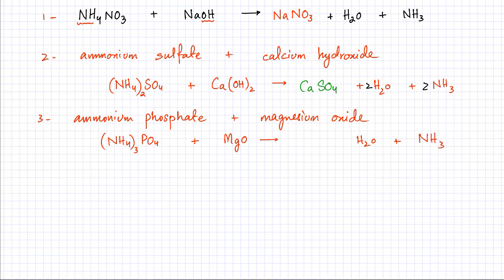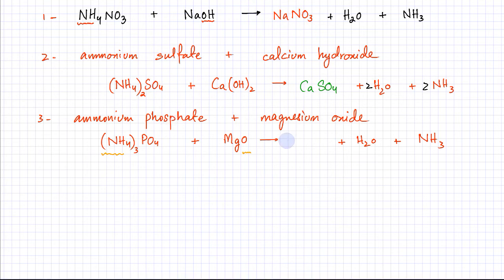Let's figure out what the salt is going to be. The ammonium ions got converted into ammonia; the oxide got converted into water. The only ions left are magnesium and phosphate. Mg is 2+ and PO4 is 3-, so using the crisscross method: there would be 3 magnesium ions and 2 phosphate ions, giving the salt Mg3(PO4)2.